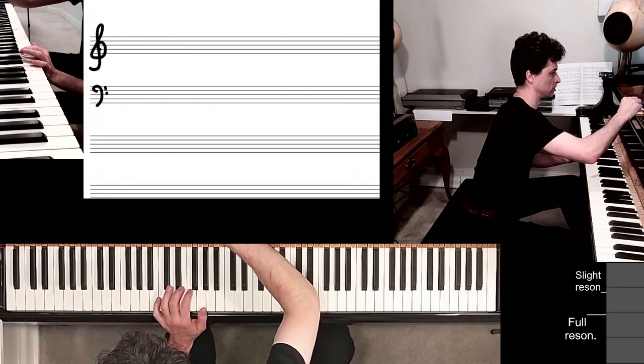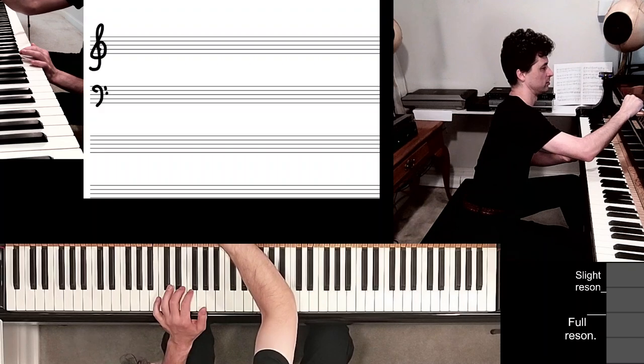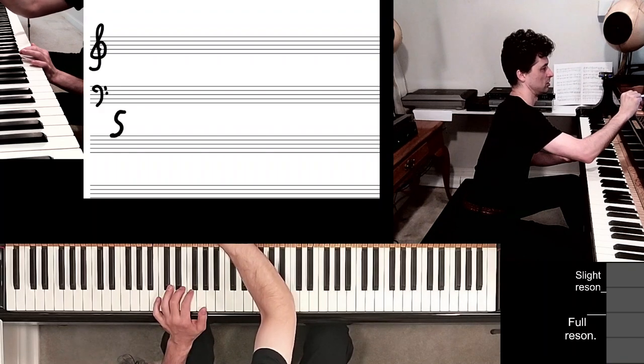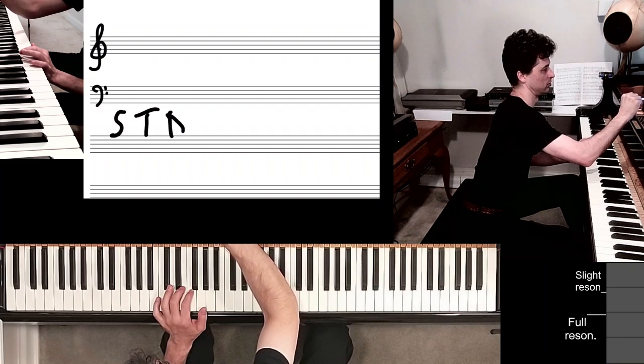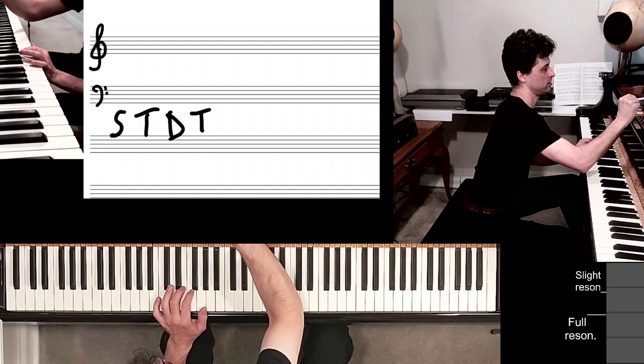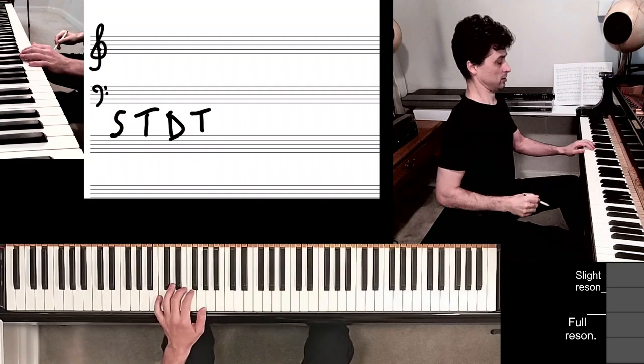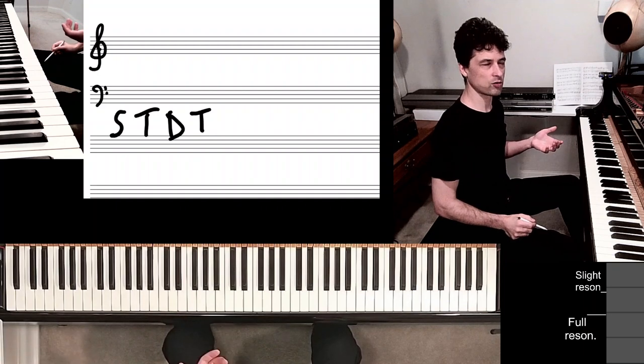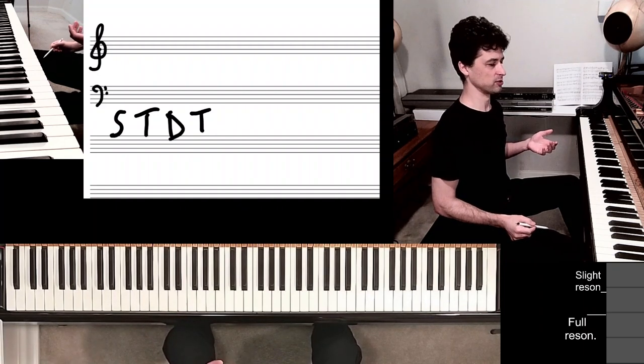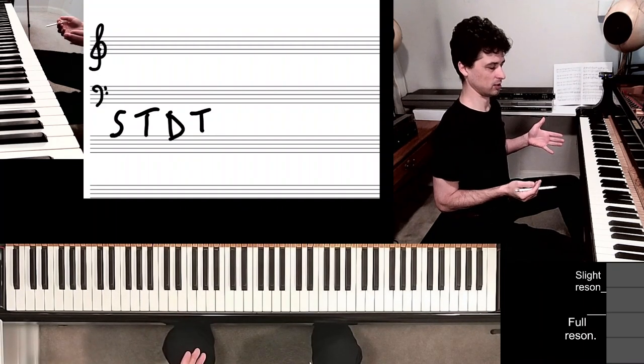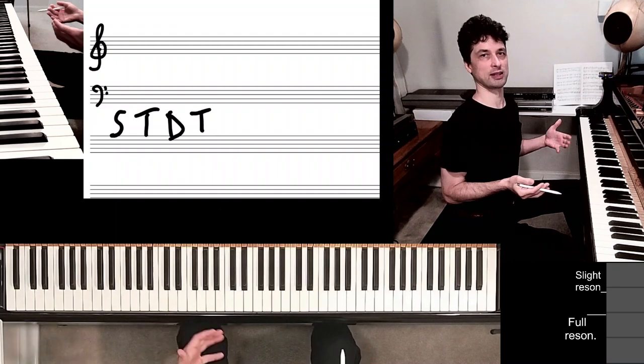We have tonic, subdominant, tonic, dominant, tonic idea. Now these block chords don't really communicate much about the style. They just sound like okay, there is the harmony, now what?